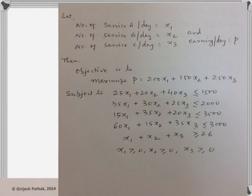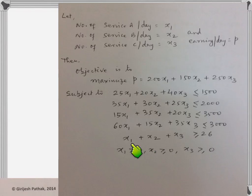Some common errors students make in linear program formulation: one is forgetting to write whether the objective is to maximize or minimize. The type of constraint is also very important — less than or equal to, greater than or equal to, or equal to — they cannot be interchanged. Writing the wrong constraint type is a serious error. People also forget to write the non-negativity constraint, which is again a serious error and should be avoided.